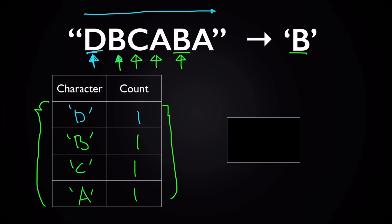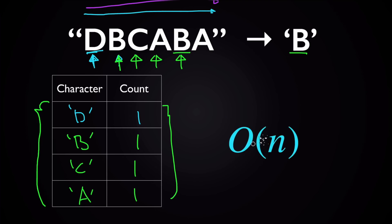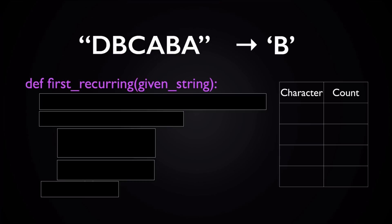With this solution, because we only go through the string once from left to right, the time complexity — the runtime for this algorithm — is O(n), where N is the number of characters in the string. Now let's see what this solution might look like in code.